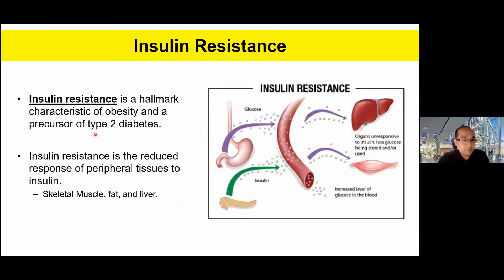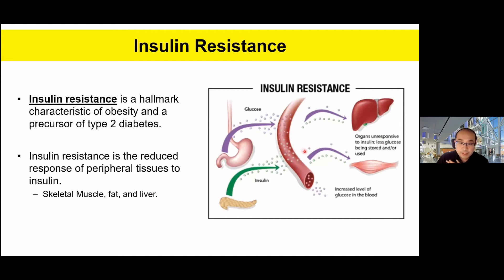One of the common conditions associated with obesity — often considered the hallmark characteristic and a precursor of developing type 2 diabetes — is insulin resistance. It is defined as a reduced response of your peripheral tissues, including skeletal muscle, fat, and liver, to insulin. Normally these tissues are very responsive to take blood glucose out of the bloodstream to lower blood sugar, but under insulin-resistant conditions, they become less responsive. The pancreas must work harder to pump more insulin into the bloodstream, and eventually it fails — that becomes type 2 diabetes.